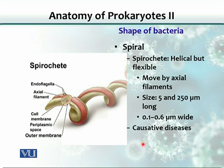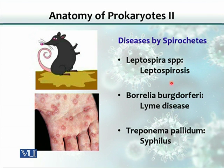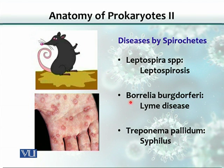Spirochetes cause many diseases in humans and animals. For example, Leptospira species causes fever in animals and humans, and rats are very common agents for spreading this disease. Another disease caused by spirochetes is Lyme disease, caused by Borrelia burgdorferi. Another one is Treponema pallidum, which causes syphilis, the sexually transmitted disease, producing signs and ulcers on the body.